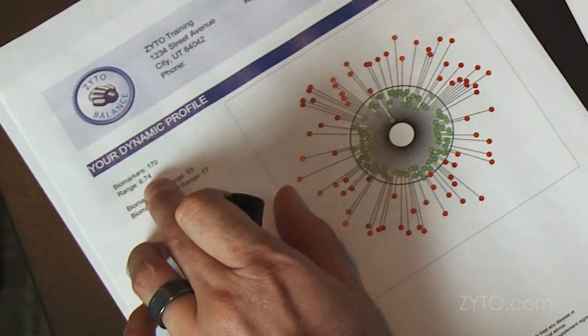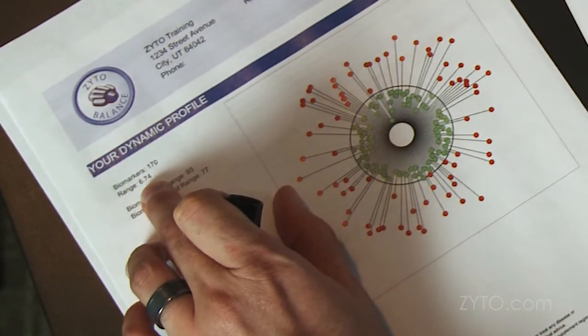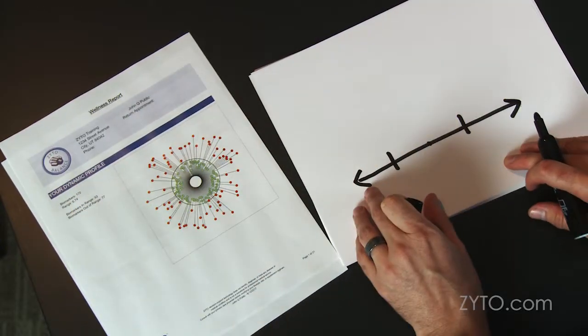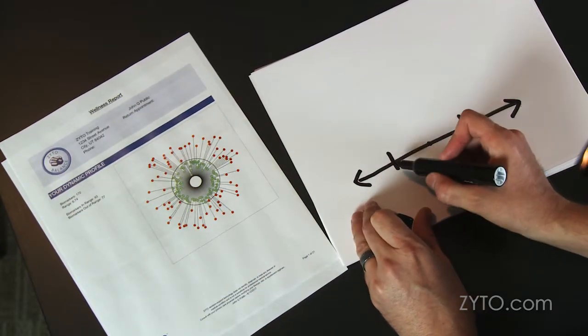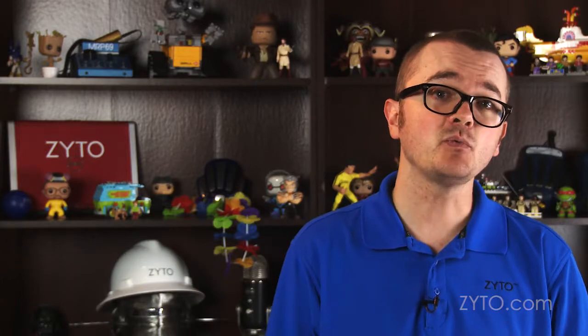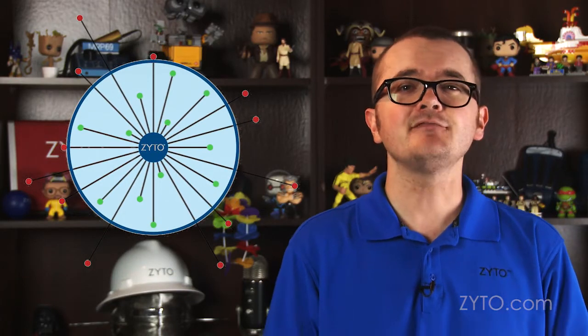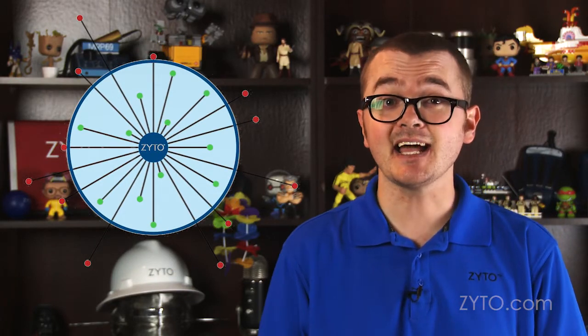In this particular report, our range extends between 6.74 and negative 6.74. Now that we have range, we can start measuring and plotting the stressor responses in relation to the range. Any that fall outside of that range will be the ones that we're interested in, whether positive or negative.